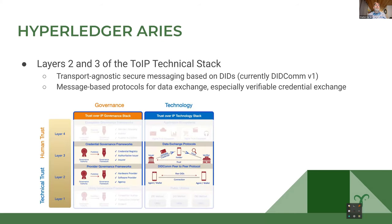For those not familiar, Hyperledger ARIES is a product that spun out of early work in Hyperledger Indy, but is quite different. It implements layer two and three of the Trust over IP technical stack — transport agnostic, secure messaging based on DIDs. So DIDCOM at layer two, and then at layer three, message-based protocols using the messaging of DIDCOM to do data exchange, in particular verifiable credential data exchange. That's basically where ARIES fits in.